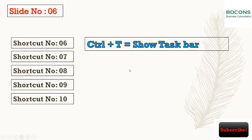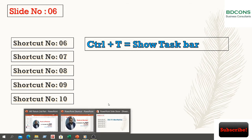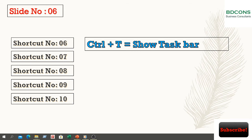Shortcut 6: Taskbar. If you need to view your taskbar, press Ctrl+T, and then you can open another file from your taskbar.